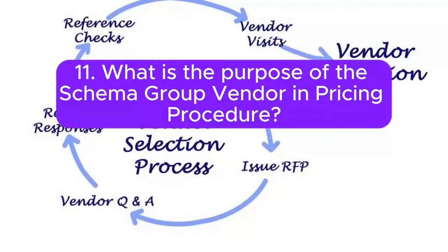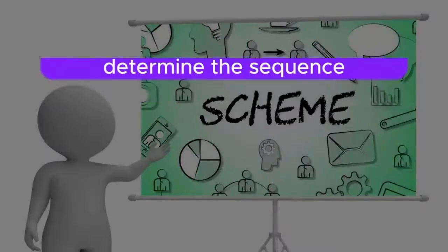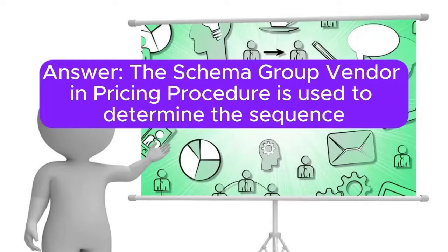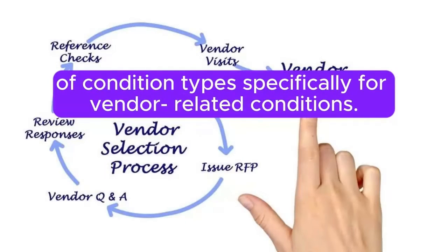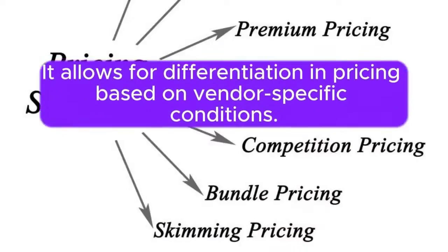Question 11: What is the purpose of the schema group vendor in pricing procedure? Answer: The schema group vendor in pricing procedure is used to determine the sequence of condition types, specifically for vendor-related conditions. It allows for differentiation in pricing based on vendor-specific conditions.